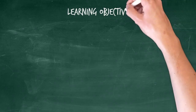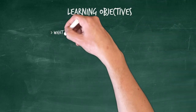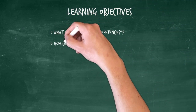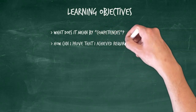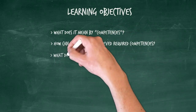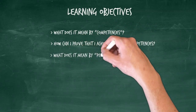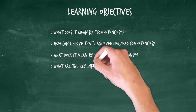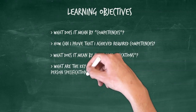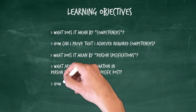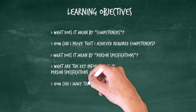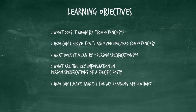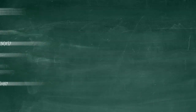In this lesson we're going to talk about some objectives. We are going to talk about what competencies mean, how you can prove that you've achieved the required competencies, what a person specification means, what are the key pieces of information to look for in a person specification, and how you can make targets to achieve those person specifications.